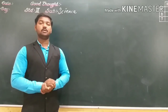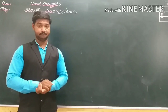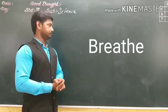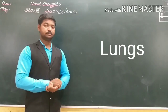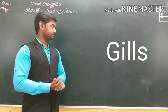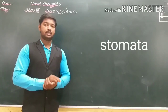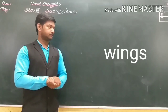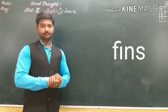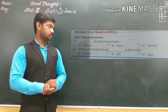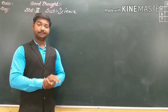Now I will give you some words that you have to copy. Also find their meaning and underline them. The words are: 1. Breathe, 2. Lungs, 3. Gills, 4. Stomata, 5. Fins. Now look at page 32 — multiple choice questions are given there that we have to solve. Read the lesson. Thank you.